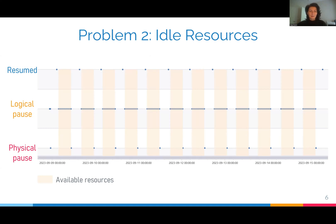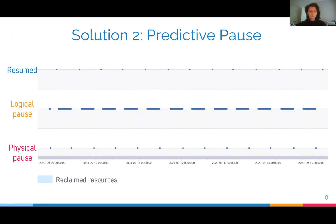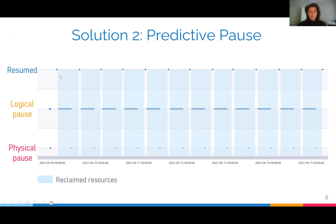Also, if the customer does not come online during logical pause, we physically pause the database. We can reclaim the resources during physical pause and reuse them for other databases on the same node. Unfortunately, the duration of physical pause can be too short to effectively reuse these resources. Therefore, we propose to predict the login pattern for each database, and if we know that the next login is very far out, we can skip logical pause and go into physical pause immediately. In this way, we make the time intervals during which resources can be reused longer.